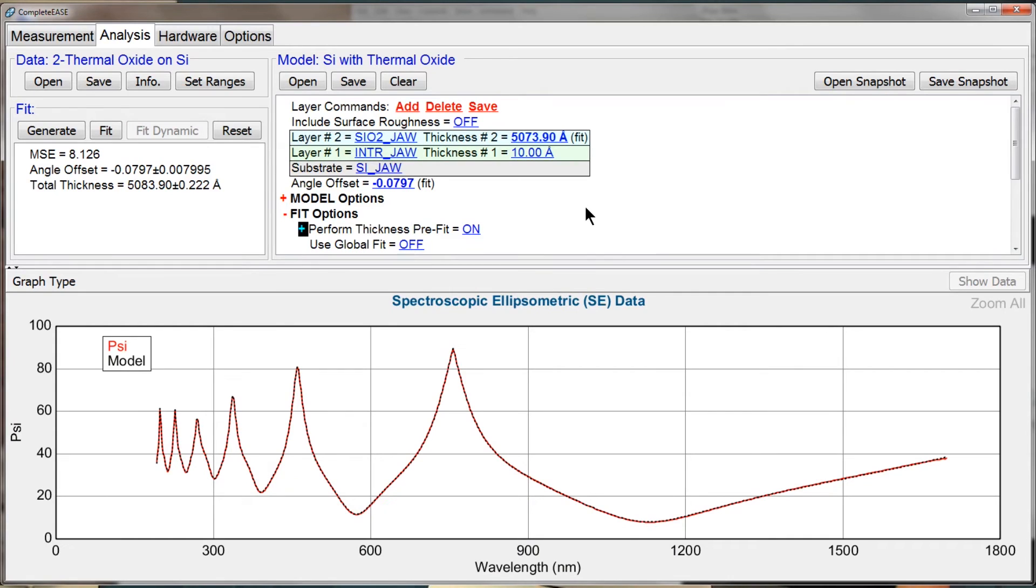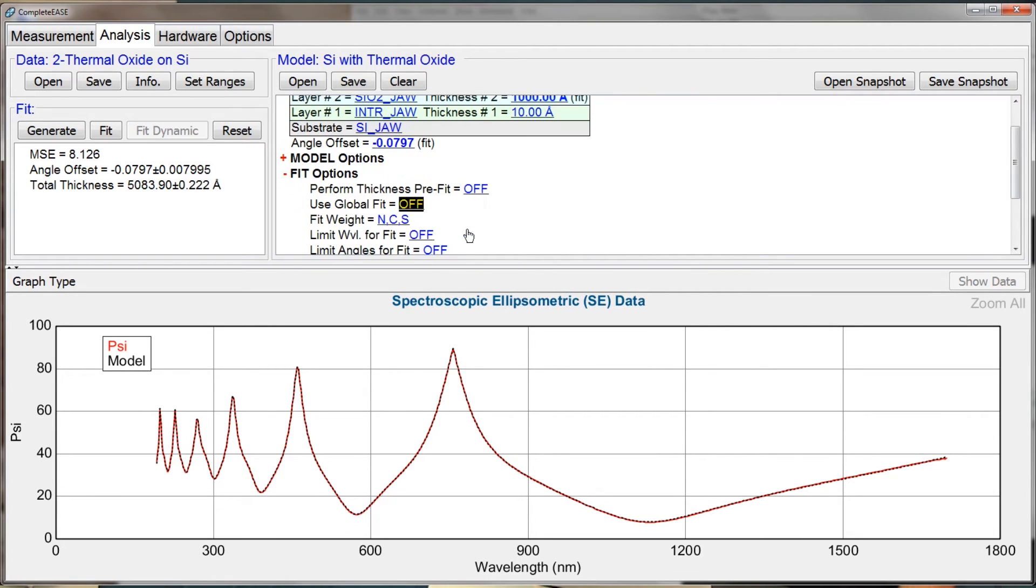Now there's another way that we could have found that answer. Let me go back to the wrong answer, 1,000. Turn off the thickness pre-fit so that you can see that it no longer works from the incorrect result.